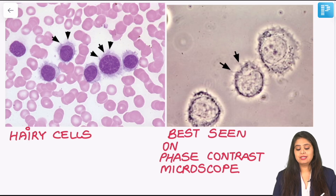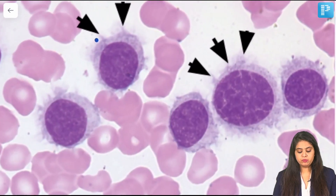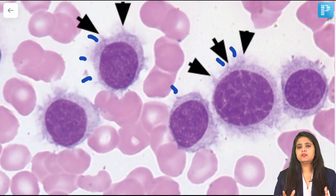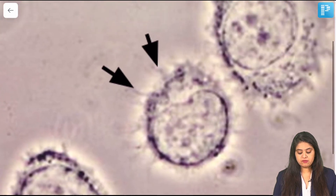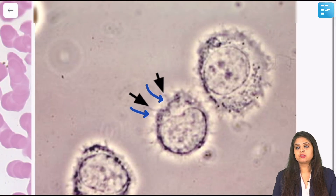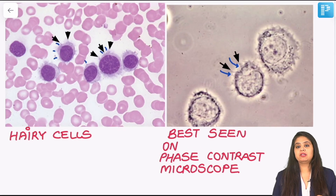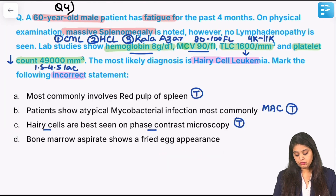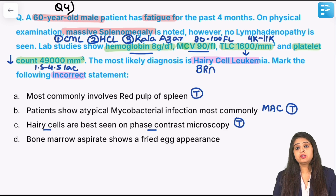Under light microscope, you can see tiny hairy projections, but it's difficult to visualize; you have to zoom in. If you truly want to see them, the best microscope is the phase contrast microscope, which will show those thin hair-like projections that make it hairy cell leukemia. From a genetics point of view, almost 100% of cases show BRAF V600E mutation, which is important.